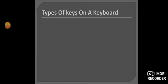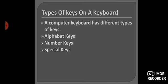Next, types of keys on a keyboard. There are three types of keys on a keyboard. A computer keyboard has different types of keys and their names are alphabet keys, number keys and special keys. ये तीन तरे की keys होती हैं keyboard के उपर.